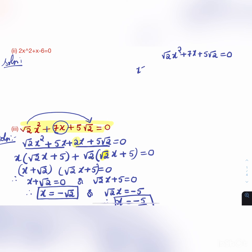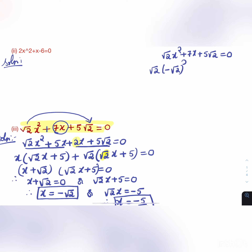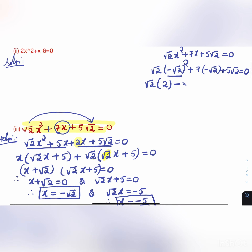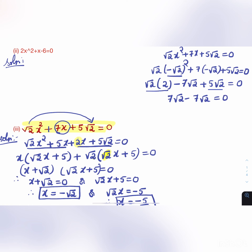Checking x = -√2: substituting into √2x² - 7x + 5√2 = 0 gives √2(√2)² - 7(-√2) + 5√2 = 2√2 + 7√2 ... wait, we get 2√2 + 7√2 - 7√2 ... the verification gives 2√2 + 5√2 = 7√2, and -7(-√2) = 7√2, so 7√2 - 7√2 = 0. So 0 = 0, and the first root is confirmed correct.